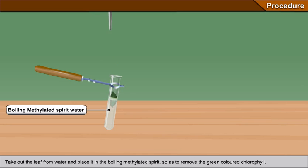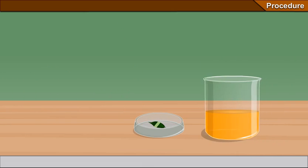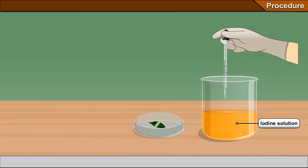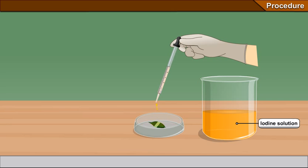Now keep the leaf in a petri dish and add a few drops of iodine solution. After 2 minutes, take out the leaf from iodine solution and wash it with fresh water.